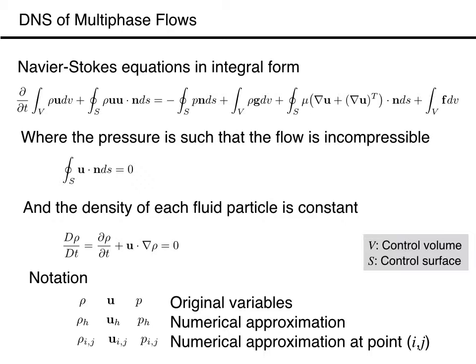We assume that the flow is incompressible, so its volume is conserved. For a control volume, this means that the inflow must balance outflow, and that the integral of the normal velocity over the control surface must be zero. Incompressibility is a consequence of the density of each fluid particle remaining constant, and for multiphase flows, where the density of different fluid particles is different, this means that the advection equation for the density must be included in the set of equations we need to solve.